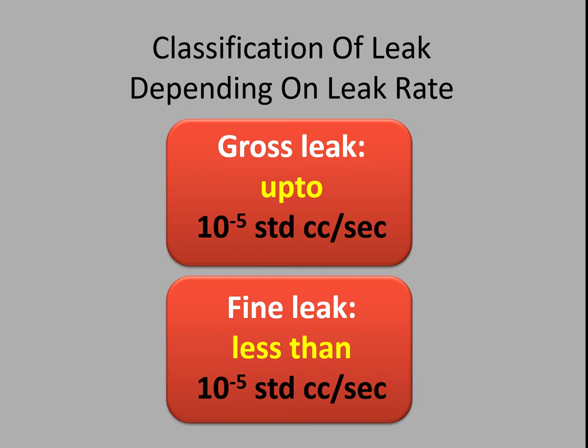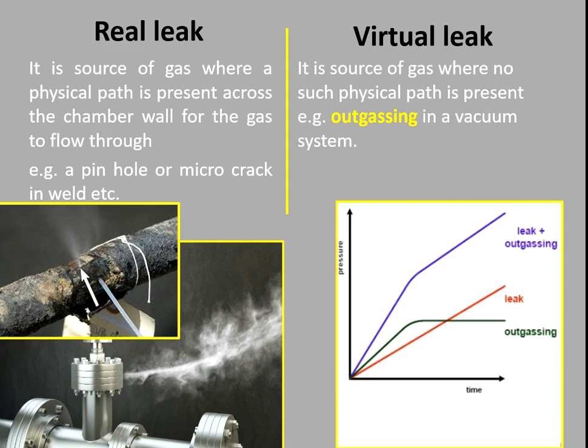A real leak is a source of gas where a physical path is present across the chamber wall for the gas to flow through. Examples include a pinhole or micro crack in a weld. In one picture you can see a rusted pipe — there must be a micro crack, pinhole, or porosity causing gas to flow out. In another picture the pipe is in good condition but gas is leaking, so there must be some opening.